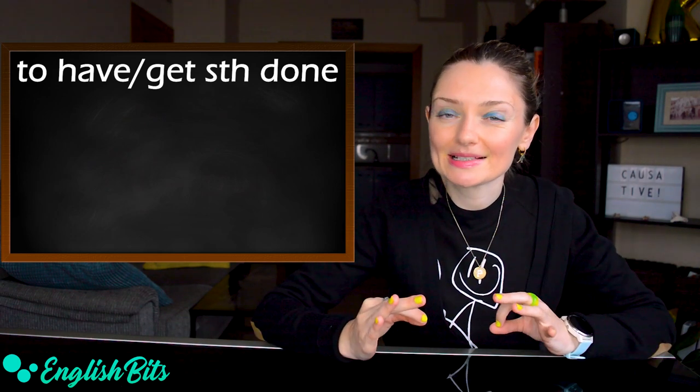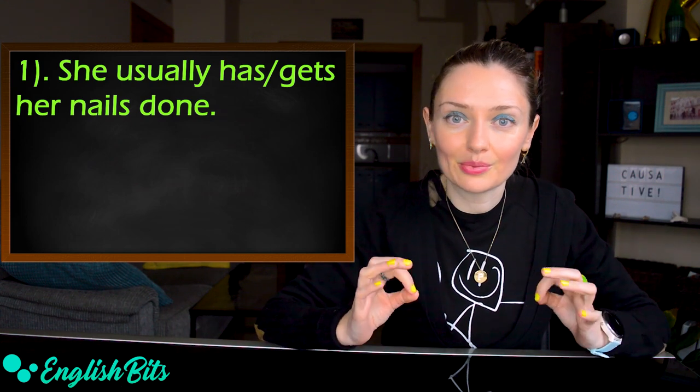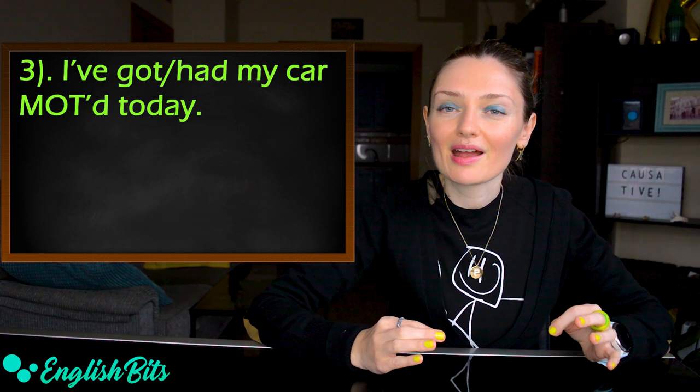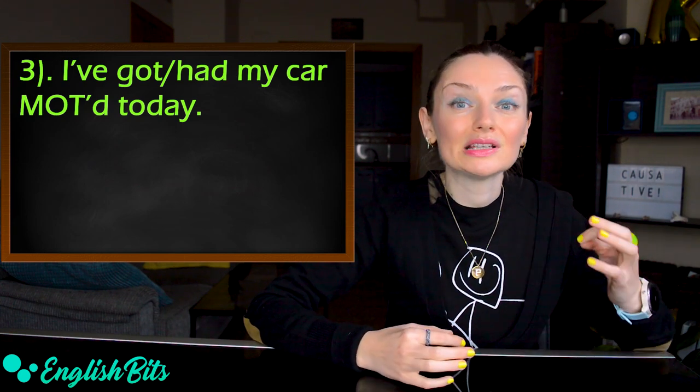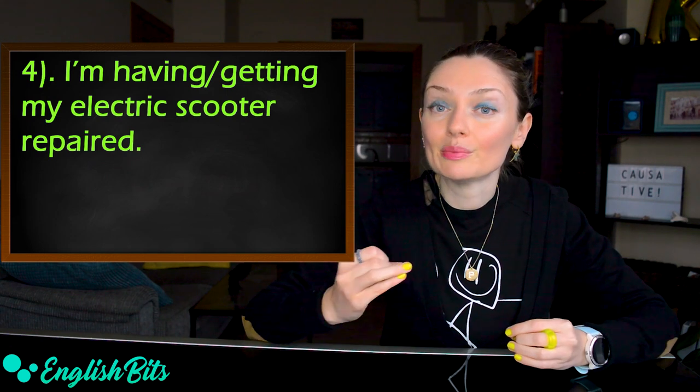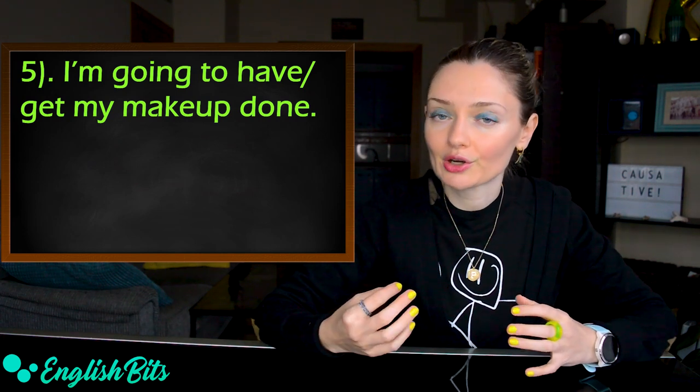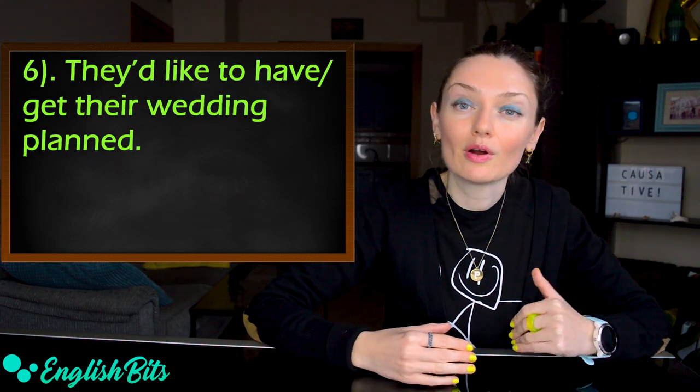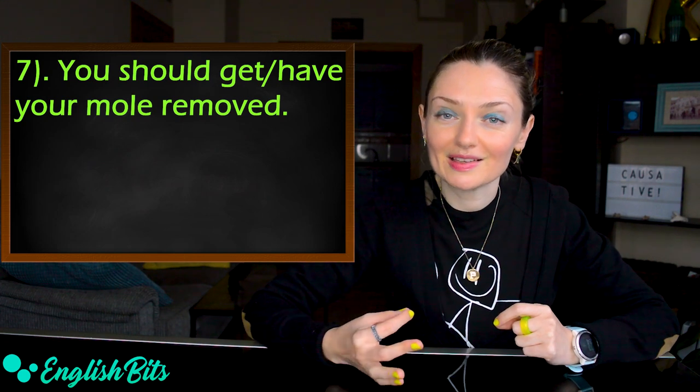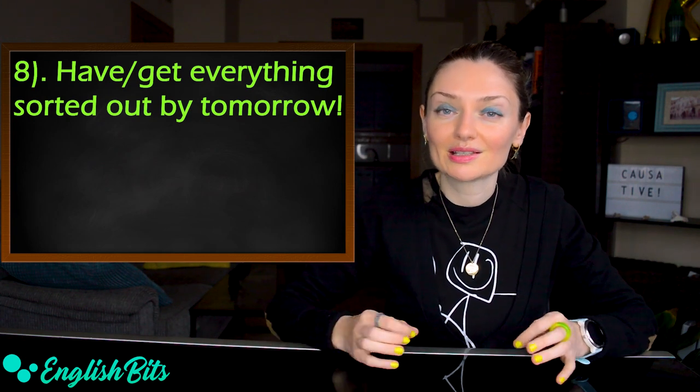Now we're going to look at eight sentences in different grammar tenses. The first one: She usually has or gets her nails done. Present simple. Number two: He had or he got his eyes checked yesterday. Past simple. Number three: I've got or I've had my car MOT'd today. Present perfect. Number four: I'm having or I'm getting my electric scooter repaired. Present continuous. Number five: I'm going to have my makeup done. In this case, it's future with to be going to. Number six: They'd like to have or they'd like to get their wedding planned. Number seven: You should get or have your mole removed. In this case, we've got a modal verb, should. And number eight: Have everything sorted out by tomorrow. In this case, we've got imperative.